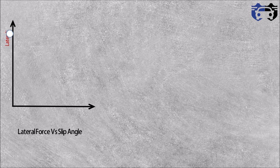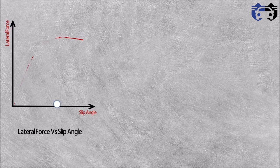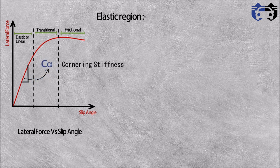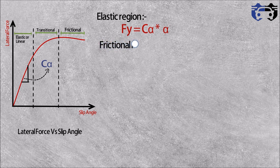Let's understand the curve between lateral force and slip angle. The curve is somewhat similar to the curve between friction and slip. It has three regions: the elastic or linear region, the transitional region, and the friction region. The first region, where lateral force is directly proportional to slip angle, gives us the slope of the curve which is C-alpha, called the cornering stiffness. So we can write lateral force Fy equals C-alpha multiplied by alpha. In the frictional region, the tire is no longer capable of sustaining the centrifugal force and skids off the track, so the maximum value of lateral force is reached, which equals Fy = mu multiplied by Fz, where Fz is the vertical load on the tire.